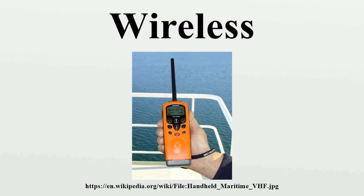Wireless communications can be via radio communication, microwave communication — for example, long-range line of sight via highly directional antennas — or short-range communication. Free space optical communication is an optical communication technology that uses light propagating in free space to wirelessly transmit data for telecommunications or computer networking. Free space means the light beams travel through the open air or outer space. This contrasts with other communication technologies that use light beams traveling through transmission lines such as optical fiber or dielectric light pipes. The technology is useful where physical connections are impractical due to high costs or other considerations.